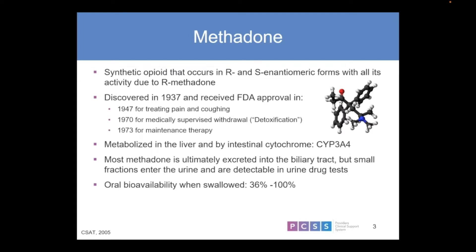Methadone has been available the longest. It is a synthetic opioid that occurs in both the R and S enantiomeric form, with all its activity due to the R methadone. It was first discovered in 1937 and received FDA approval in 1947 for the treatment of pain and coughing. It's a very effective pain medication. In 1970, it was approved for supervised withdrawal — to help ease withdrawal from other opioids or even methadone. Then in 1973, methadone was introduced as an opiate maintenance therapy for people with opiate use disorder.